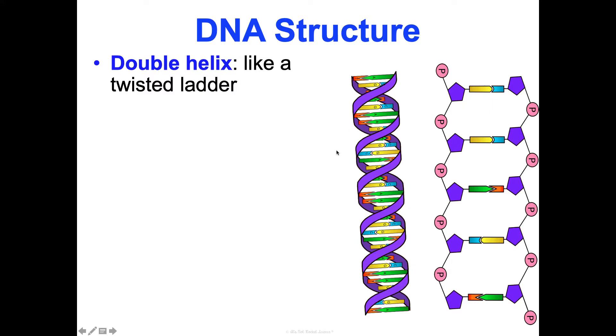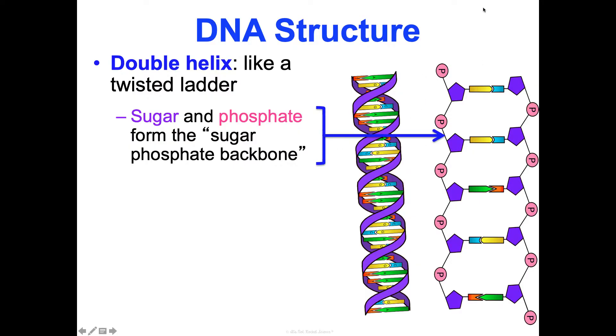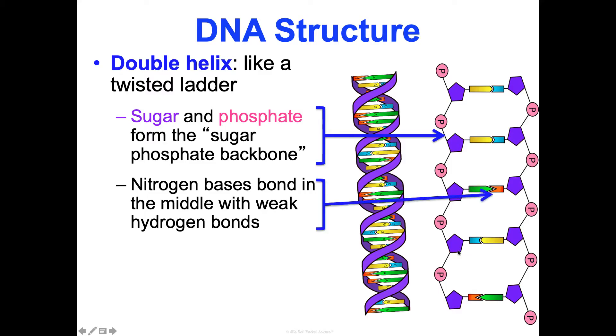Sugars and phosphate form a sugar phosphate backbone. If you were to unwind this DNA and kind of lay it flat like this ladder, there's alternating sugars and phosphates on the outside. Then nitrogen bases bond in the middle with weak hydrogen bonds and that's what forms the rungs of the ladder that you would climb. All other bonds in it are strong covalent bonds.